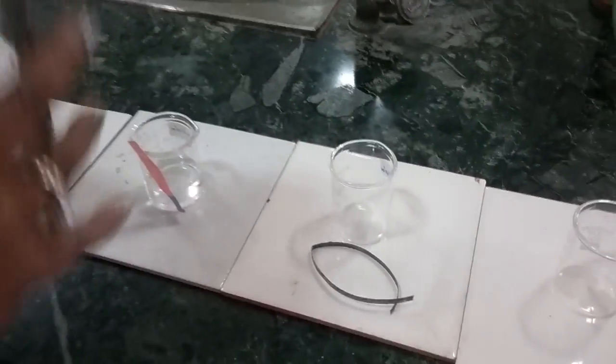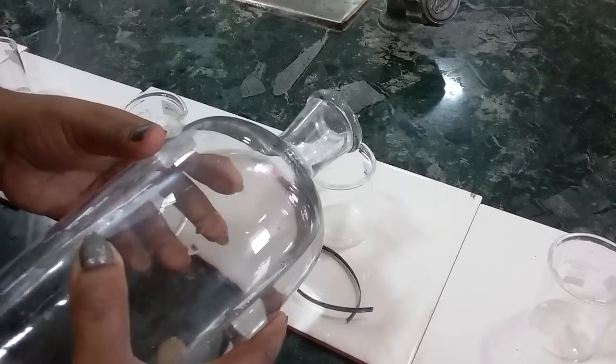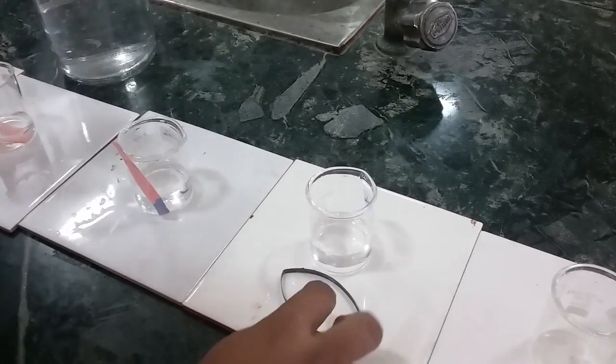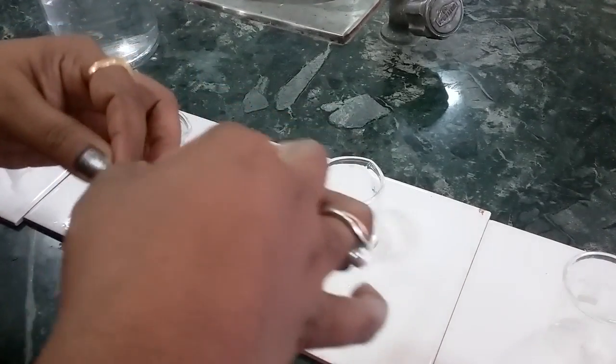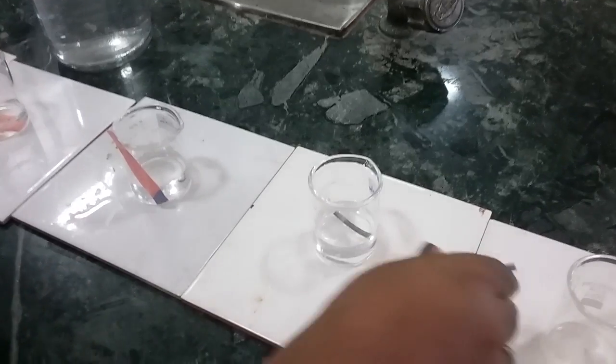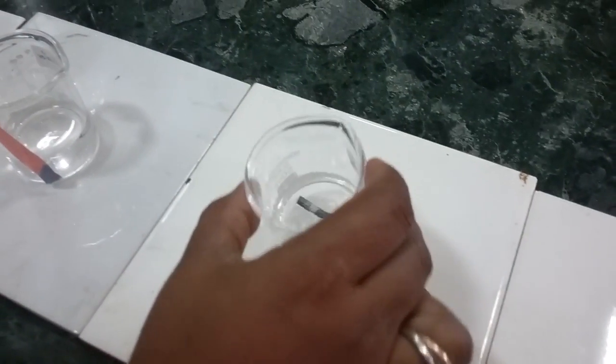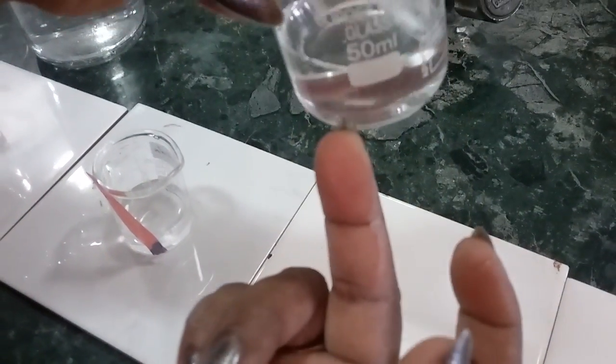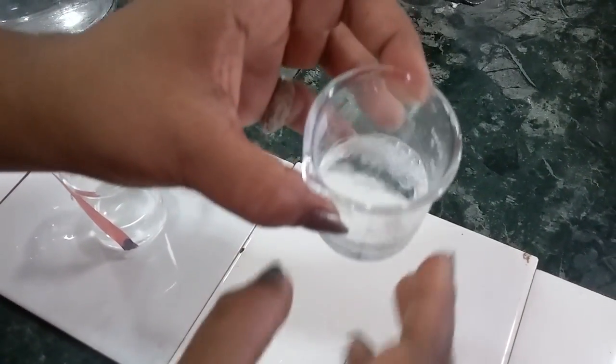If you put magnesium ribbon into acid, what will happen? This is a magnesium ribbon. I am going to put a small piece of magnesium ribbon into the sulfuric acid. You can see the bubbles inside. You can see the bubbles forming.